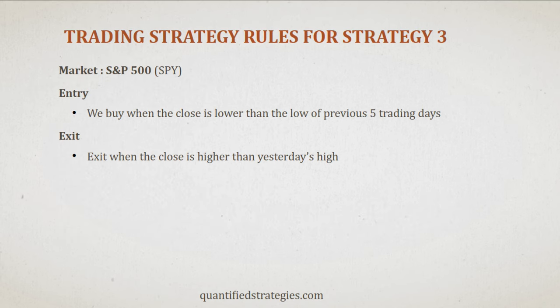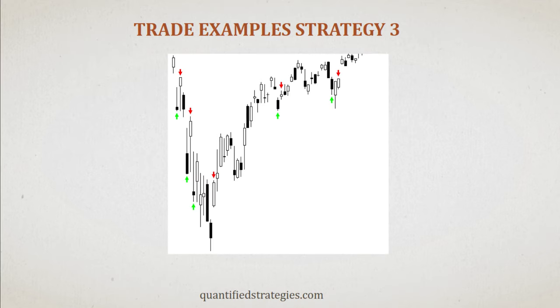Let's go to our third proven swing strategy. We buy SPY when the close is lower than the low of the previous five trading days — we buy on a five-day low. As usual, we sell when the close ends higher than yesterday's high. We see five trading examples, all of them winners. Not all turn out to be winners, but the win rate is very high, as is typical for mean reversion strategies.